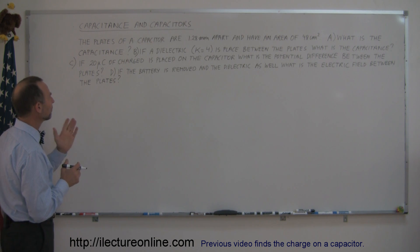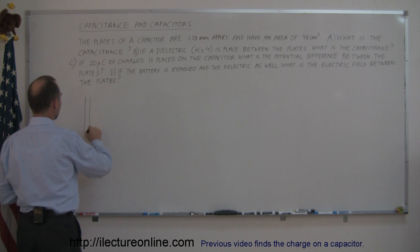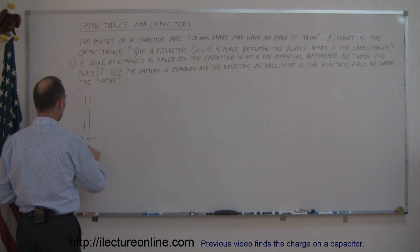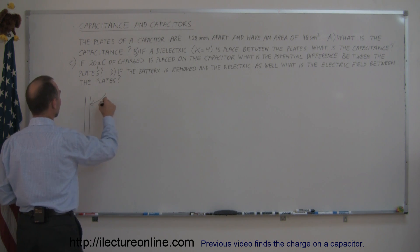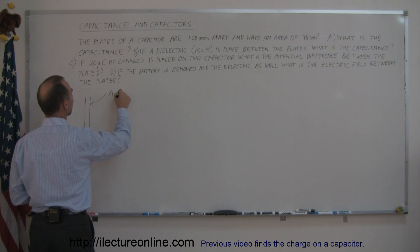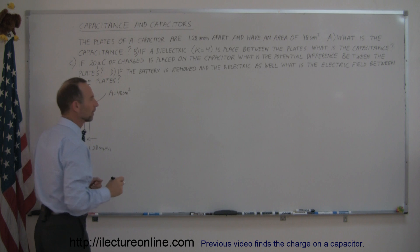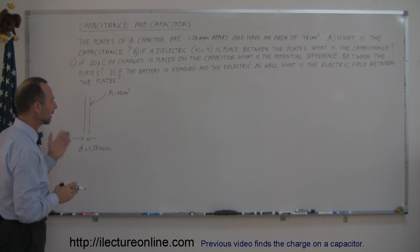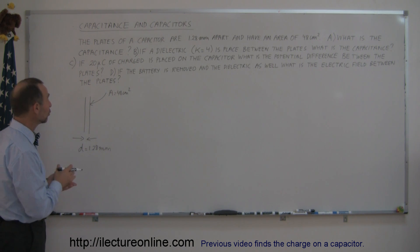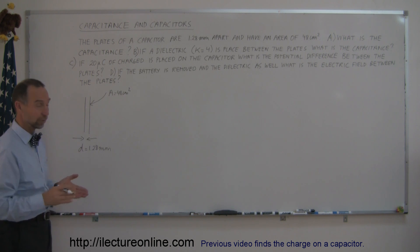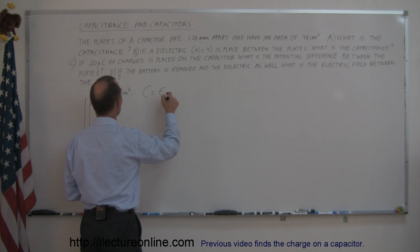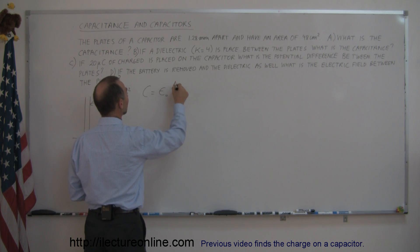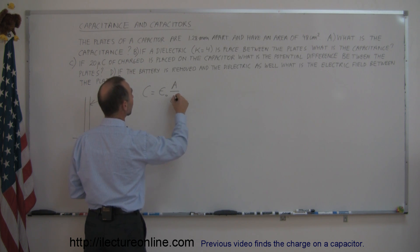First, they give us a capacitor, so let's draw it. They tell us the distance between the plates, D, is equal to 1.28 millimeters, and the area of the plates, A, is equal to 48 centimeters squared. Since we have the physical dimensions, we can use the equation: capacitance equals epsilon-sub-naught times the area divided by the distance between the plates.